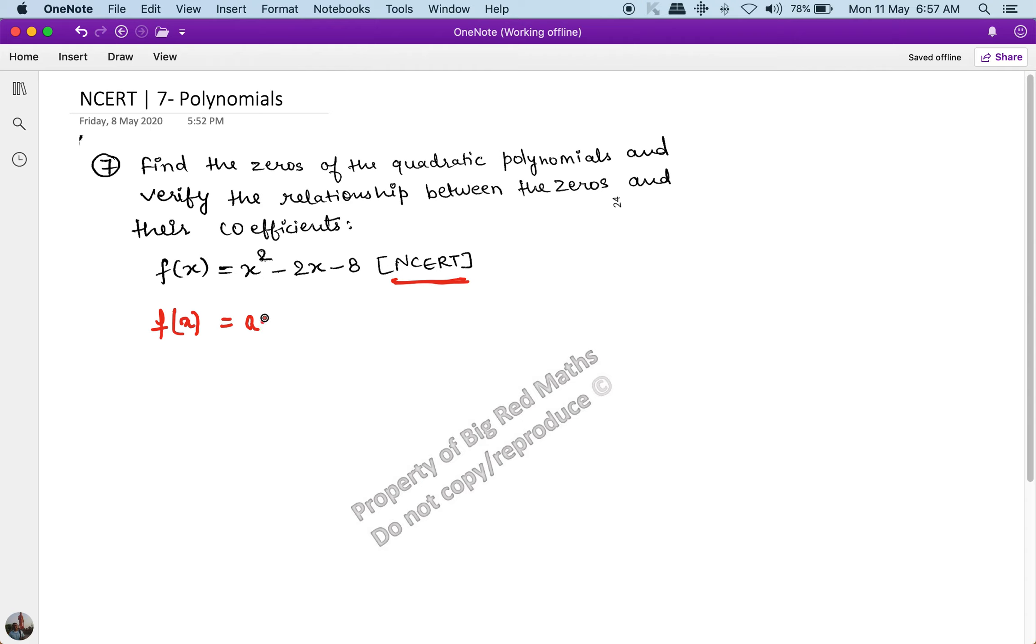The standard format of a quadratic equation is given as f(x) = ax² + bx + c. This is the standard format. If I compare these two and compare the coefficients of x² with x², the coefficient of x with x, and compare the constant, what I get is a = 1, b = -2, and c = -8.